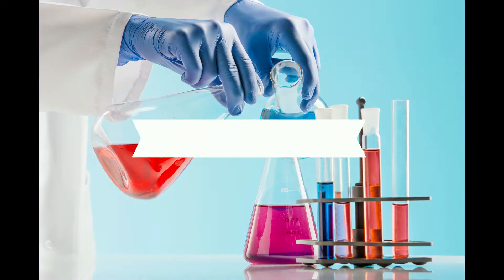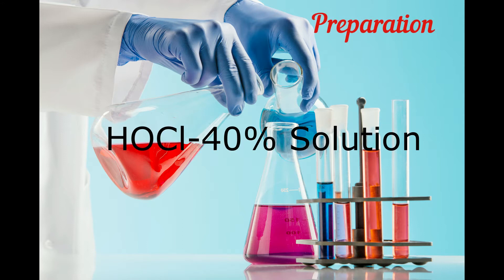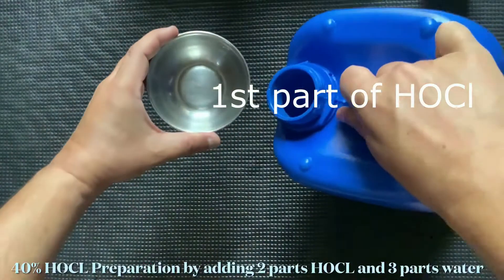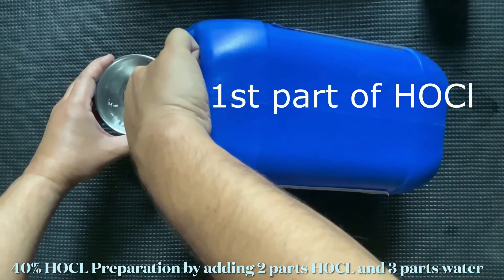Let's check the concentration of HOCL by preparing a 40% solution. It can be prepared by taking two parts of HOCL into a utensil.